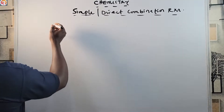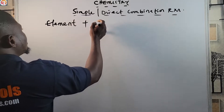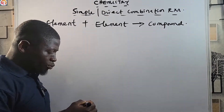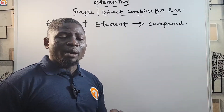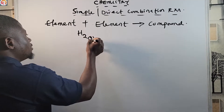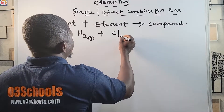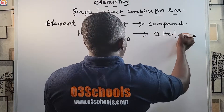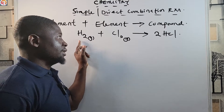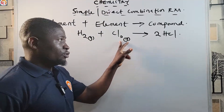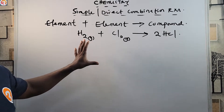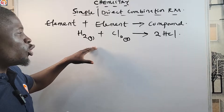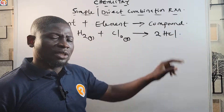These substances may be an element plus another element to give a compound. For example, hydrogen gas H₂ reacting with chlorine gas Cl₂ — halogens are diatomic — gives 2HCl. This reaction is balanced: two atoms of hydrogen on the left, two on the right; two atoms of chlorine on the left, two on the right. This is a simple or direct combination reaction where element plus element gives a compound.